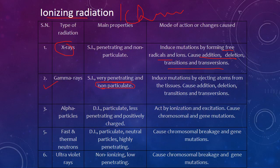Alpha particles are less penetrating and positively charged; they act by ionization and excitation, causing chromosomal and gene mutation. Fast and thermal neutrons are neutrally charged and highly penetrating — they cause chromosomal breakage and gene mutation. Ultraviolet rays are non-ionizing and low penetrating, also causing chromosomal breakage and gene mutations.